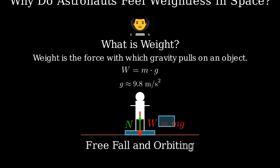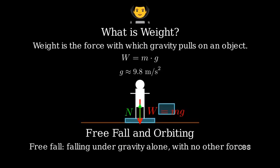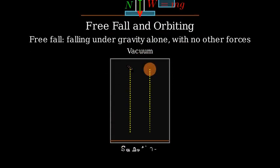Now, let's talk about free fall. An object is in free fall when it's falling under the influence of gravity alone, with no other forces acting on it. In a vacuum, all objects fall at the same rate regardless of their mass.